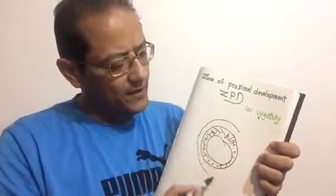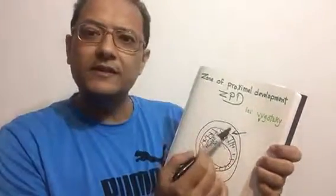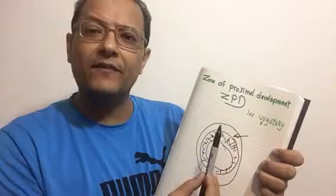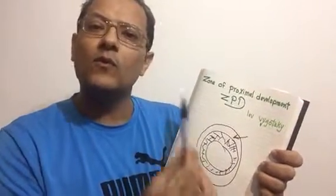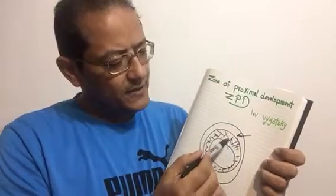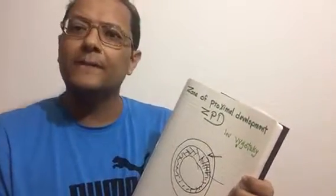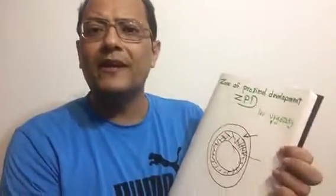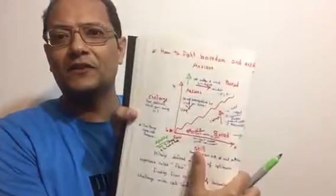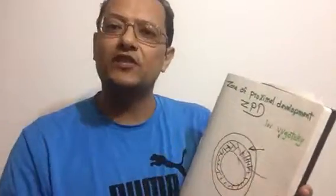The third zone is where our students or learners cannot learn with or without help. This is also what we can call the information gap as teachers. It is closely related to the wonderful idea of 'the flow' — the flow zone where skills match the challenges — by Csikszentmihalyi. That will be covered in another video.